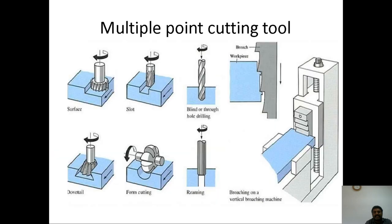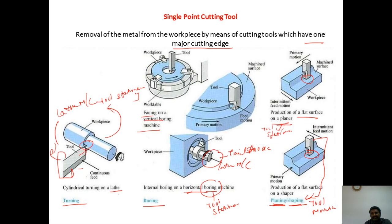Coming to the multiple point cutting tool — the removal of metal from the workpiece is by means of cutting tools which have two or more major cutting edges. Operations such as milling, drilling, and broaching use multiple point cutting tools.